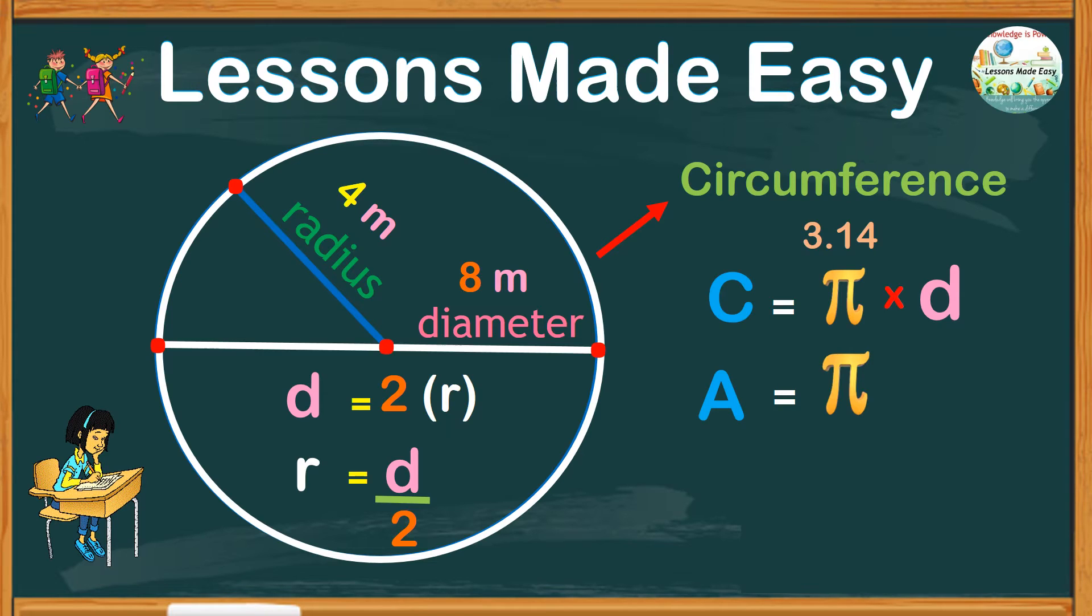This can also be expressed as r times r. Obviously, r means the radius, which can be represented by any number.